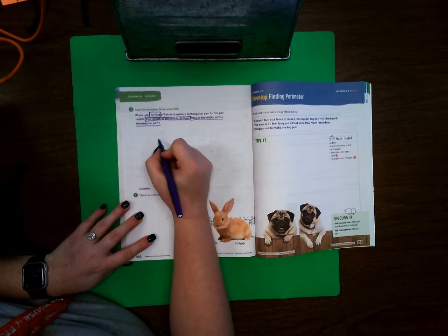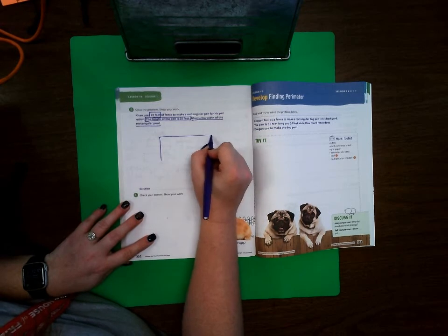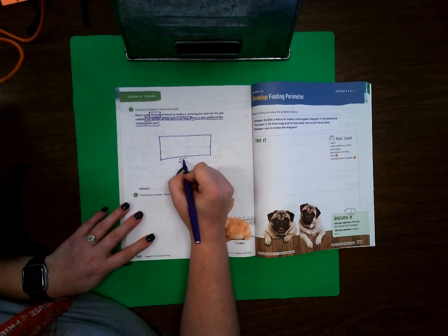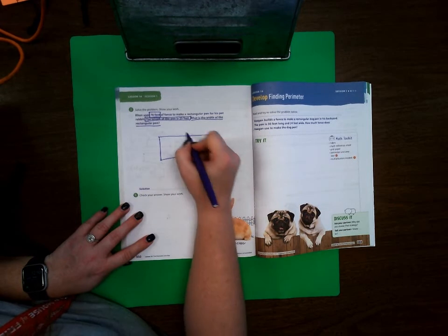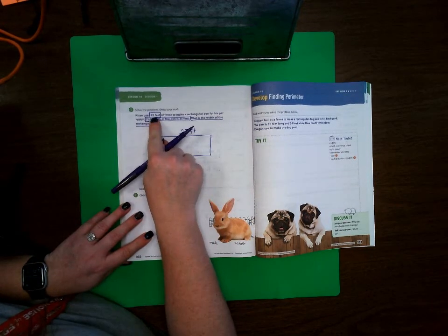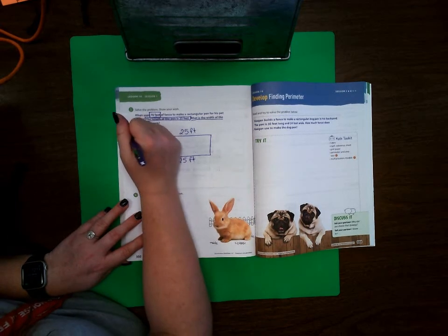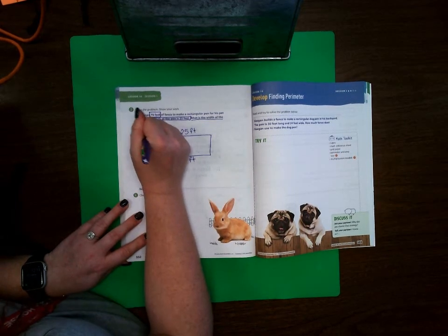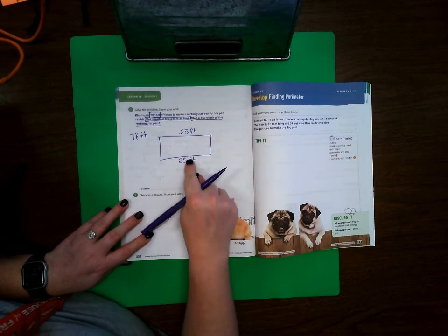Okay, so I'm going to draw my picture. If this is 25 feet, that means this has to be 25 feet. If I have 78 feet total, that means that I have to subtract these two sides first. I can subtract them one at a time or I can add these two together and then subtract. I'm going to add them together.